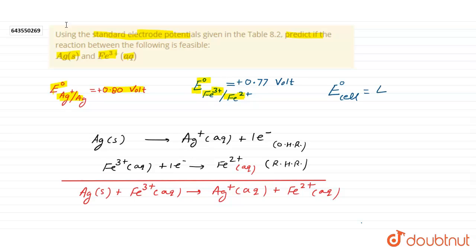We can write E naught cathode minus E naught anode. That's why E naught cell, EMF of cell will be, if this reaction feasible, which is cathode, where reduction is taking place, if I write the E naught reduction value of iron, 0.77 minus, which is anode, where oxidation takes place, I write here 0.80.